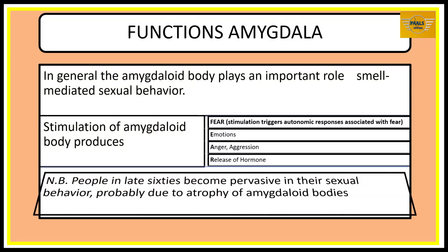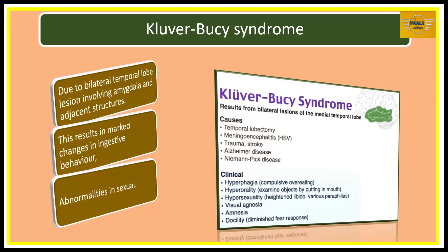The amygdala plays an important role in smell-mediated sexual behavior, and its stimulation will produce fear, emotions, anger, aggression, and release of hormones. A syndrome associated with amygdala lesion is Klüver-Bucy syndrome, which arises as a result of bilateral temporal lobe lesion involving the amygdala and adjacent structures. This results in marked changes in feeding behavior and abnormalities in sexual behavior. Clinical signs include hyperphagia (compulsive eating), hyperorality (examining objects by putting them in the mouth), hypersexuality, heightened libido, visual agnosia, amnesia, and docility.